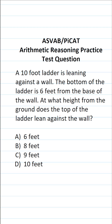This arithmetic reasoning practice test question for the ASVAB and Pyquette says: A 10-foot ladder is leaning against a wall. The bottom of the ladder is 6 feet from the base of the wall. At what height from the ground does the top of the ladder lean against the wall?